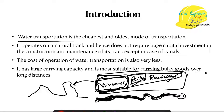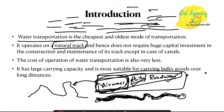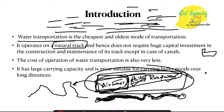This is not the case with water transportation. We have a huge amount of water available throughout the world — oceans and seas that extend worldwide. This water acts as a natural track; we do not need to construct a track like with roadways, railways, and airways. All we have to ensure is that our ships reach from point A to point B safely.